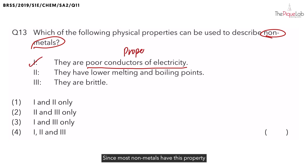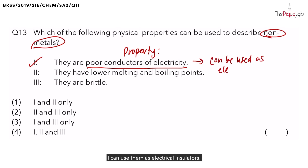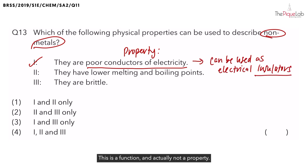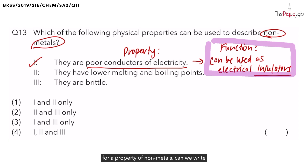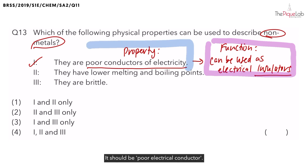Since most non-metals have this property of being poor electrical conductors, I can use them as electrical insulators. Take note — this is a function and actually not a property. So when the question asks for a property of non-metals, we cannot write 'it is a good electrical insulator'. What we should write instead is 'poor electrical conductor'.